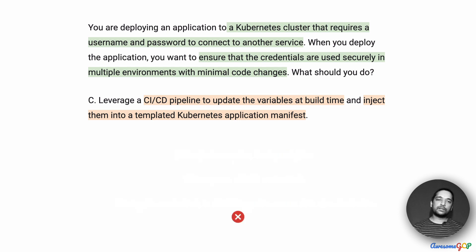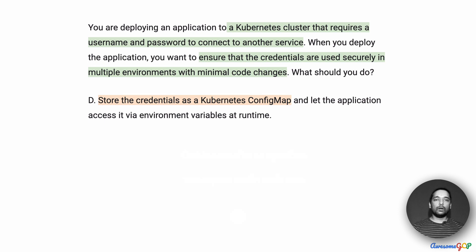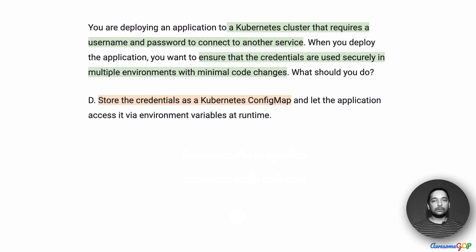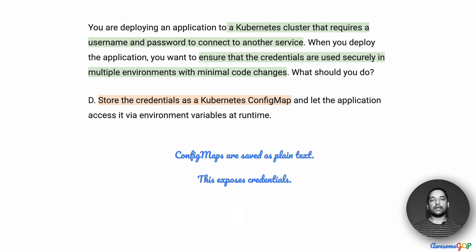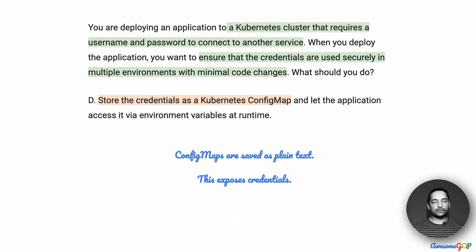So Option C is also eliminated. Option D suggests that we store the credentials as a Kubernetes ConfigMap and let the application access it via environment variables at runtime. This is possible; however, ConfigMaps are also saved as plaintext. This obviously exposes the credentials, and therefore this is not the right option.